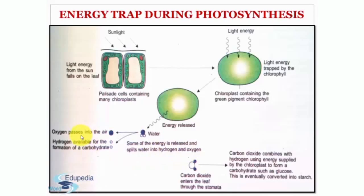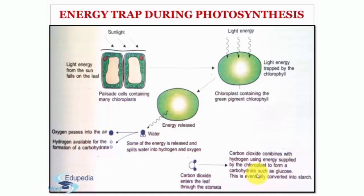Here you can see where oxygen and hydrogen are utilized. Carbon dioxide enters the leaf through the stomata, and combines with hydrogen using energy supplied by the chloroplasts to form a carbohydrate such as glucose, which is eventually converted into starch.